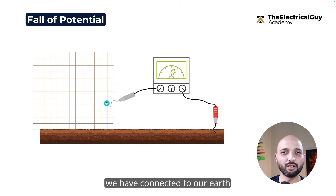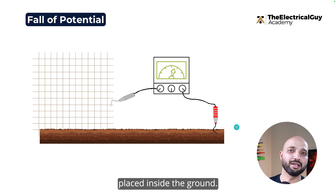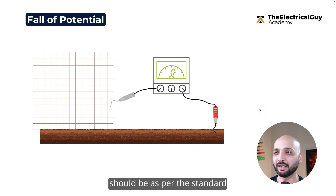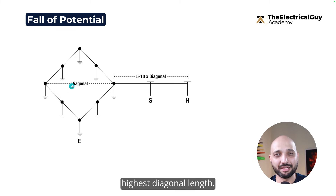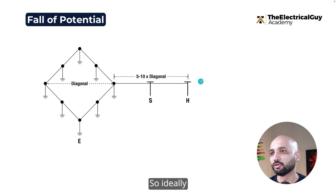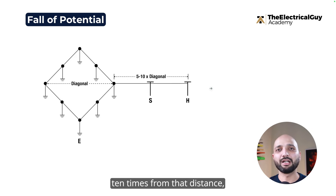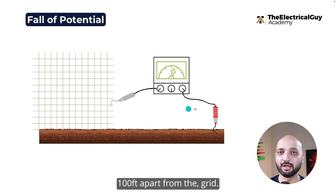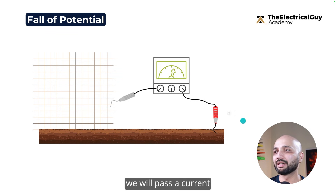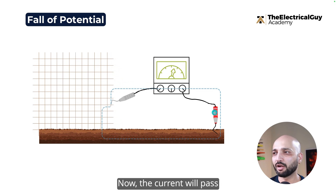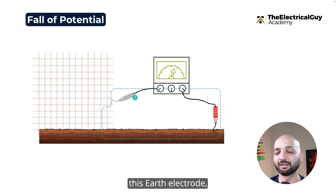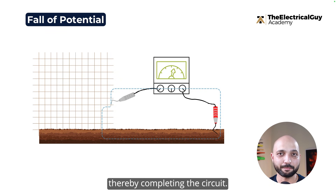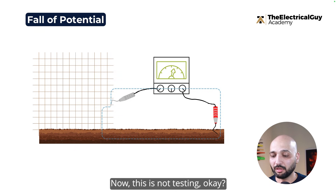The second electrode is placed in the ground. The distance between the two should be, as per the standard, 5 to 10 times the diagonal length of the grid. For example, if the highest diagonal length is 10 feet, you should place the test electrode around 100 feet away. We then pass a current through the test meter — the current travels through the earth electrode, through the ground, then to the earth grid, and back to the meter via the earth electrode, completing the circuit.